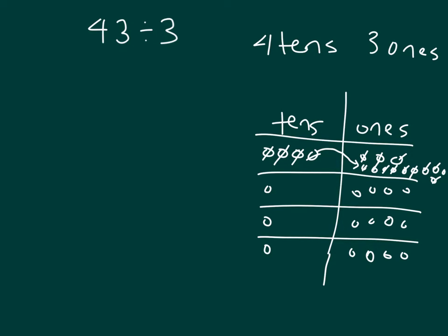And within each of these groups, we have 1 ten with 4 ones. So that 43 divided by 3 is 14 with the remainder of 1.